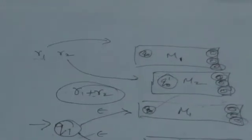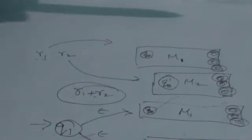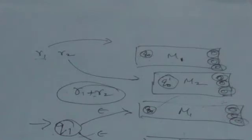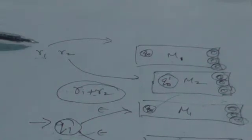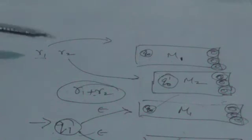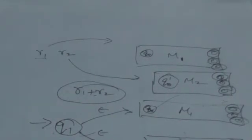Now suppose R1 and R2 are two regular expressions. M1 is the finite automata corresponding to R1, and M2 is the finite automata corresponding to R2. Q0 is the initial state of M1, Q0' is the initial state of M2. M1 accepts all strings belonging to the language of R1, and M2 accepts all strings belonging to the language of R2. We need to design a finite automata for R1 plus R2.